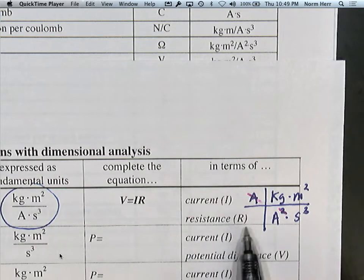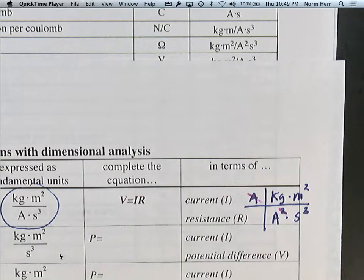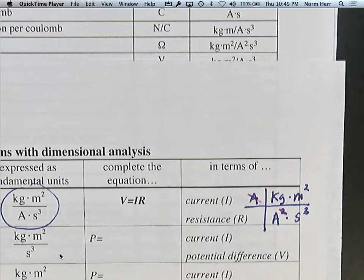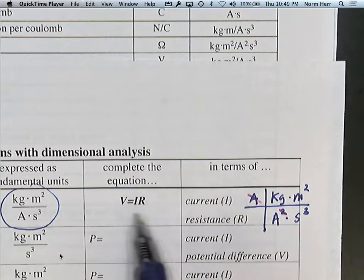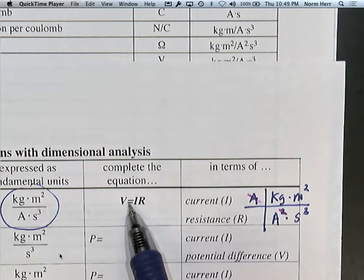The units on the left always have to equal the units on the right — that's what the equals sign means, not only in terms of the actual quantity, but also in terms of the units being measured.